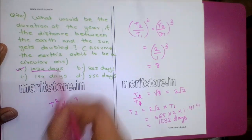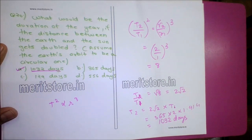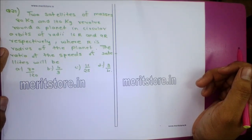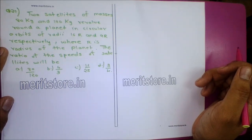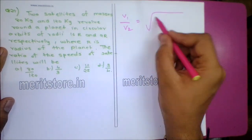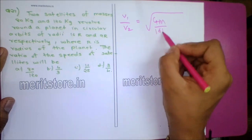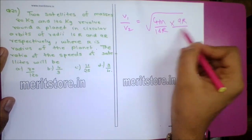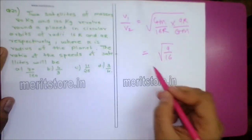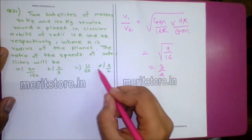Question 21: Two satellites of mass 80 kg and 120 kg revolve around a planet in circular orbits of radii 16R and 9R respectively. The ratio of their speeds: V1/V2 = √(GM/16R × 9R/GM) = √(9/16) = 3/4. Option D, 3:4, is the correct answer.